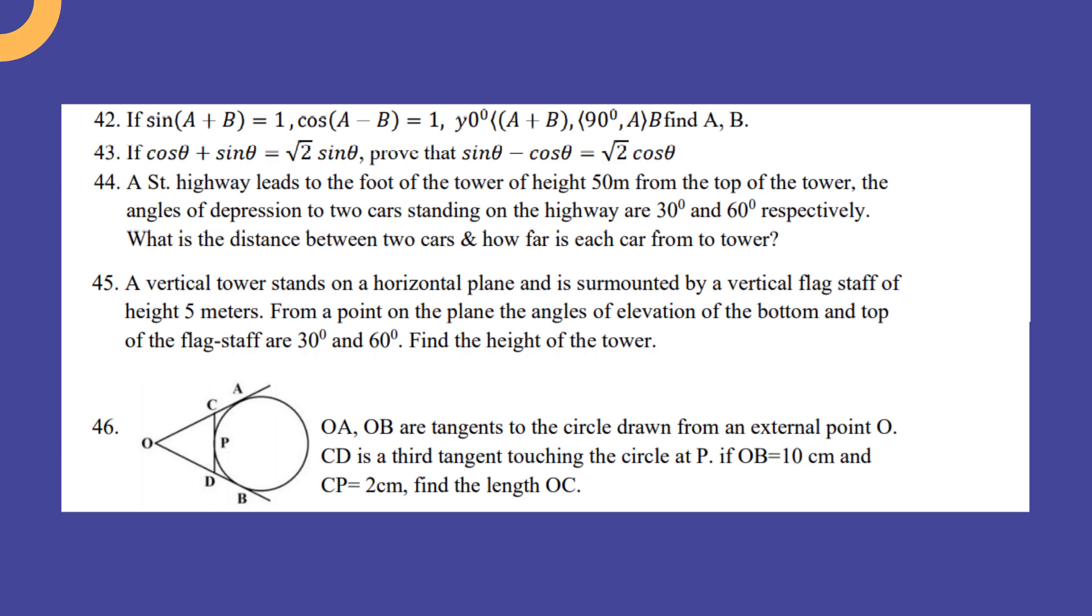OA and OB are the tangents of the circle drawn from an external point O. CD is the third tangent touching the circle at P. If OB = 10 cm and CP = 2 cm, find the length OC.